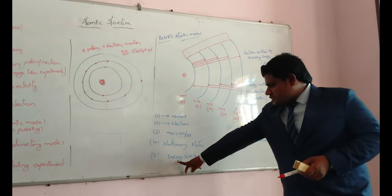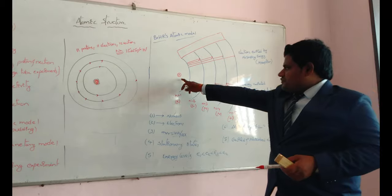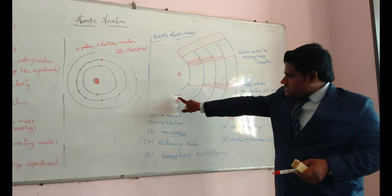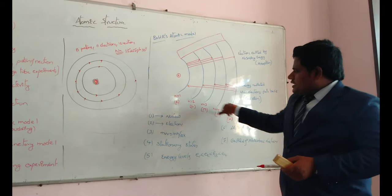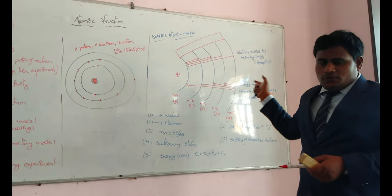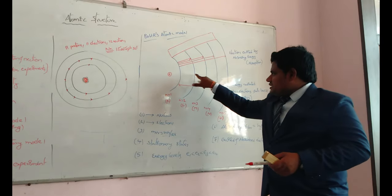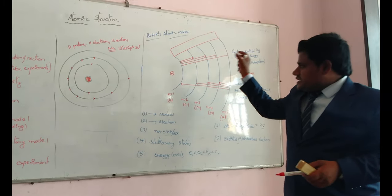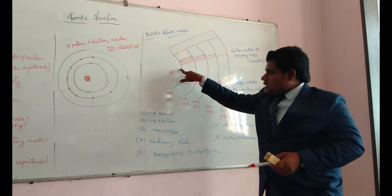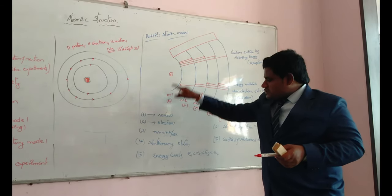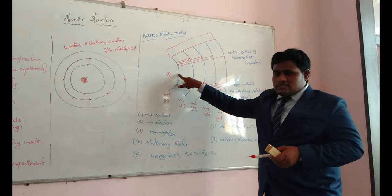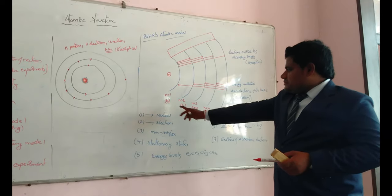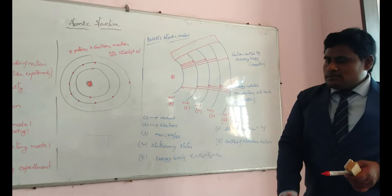Now we are going to discuss energy levels. If you go far away from the nucleus, there are many quantized energy levels, which can be represented by K, L, M, N, O and so on, or by numbers n = 1, 2, 3, 4. The energy of these energy levels increases as we go away from the nucleus. These are the stationary states and are associated with some energy, so these are known as energy levels. The energy increases when going away from the nucleus, represented by K, L, M, N, O.